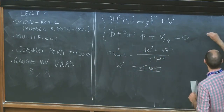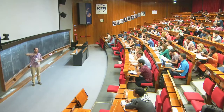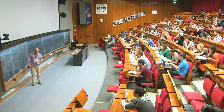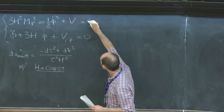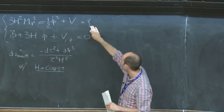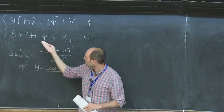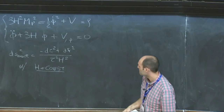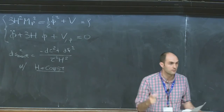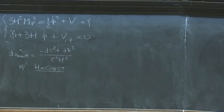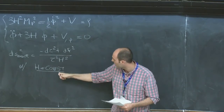Where we left off was a theory with a scalar field coupled to gravity, and we computed the two relevant equations to describe the background: the Friedmann equation and the equation of motion for the scalar field. The Friedmann equation looks very familiar — it's just 3H² M_Pl² equal to the energy density, assuming the universe is spatially flat. The equation of motion also looks familiar, except that there is a Hubble friction term.